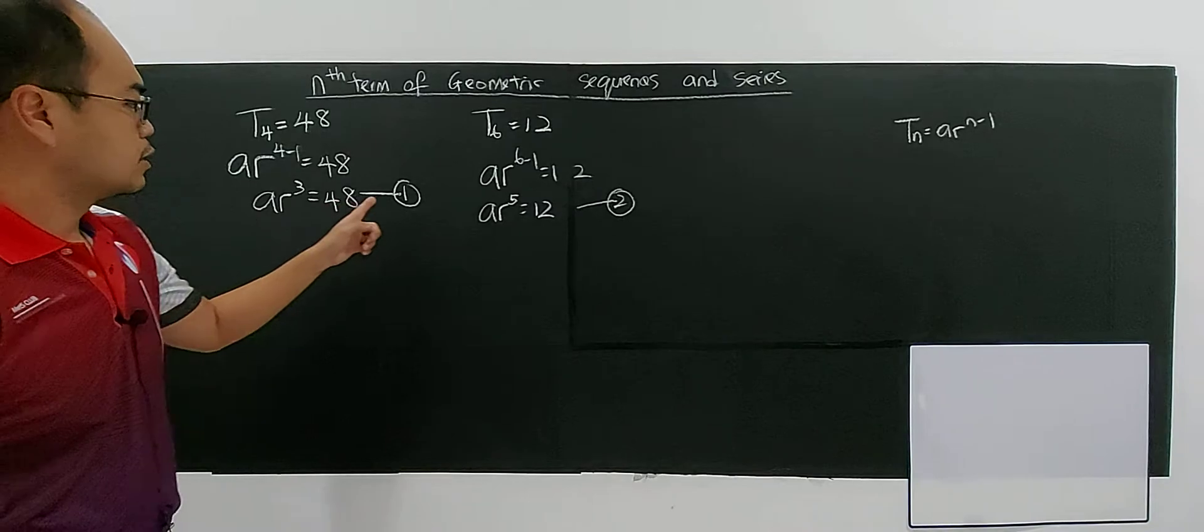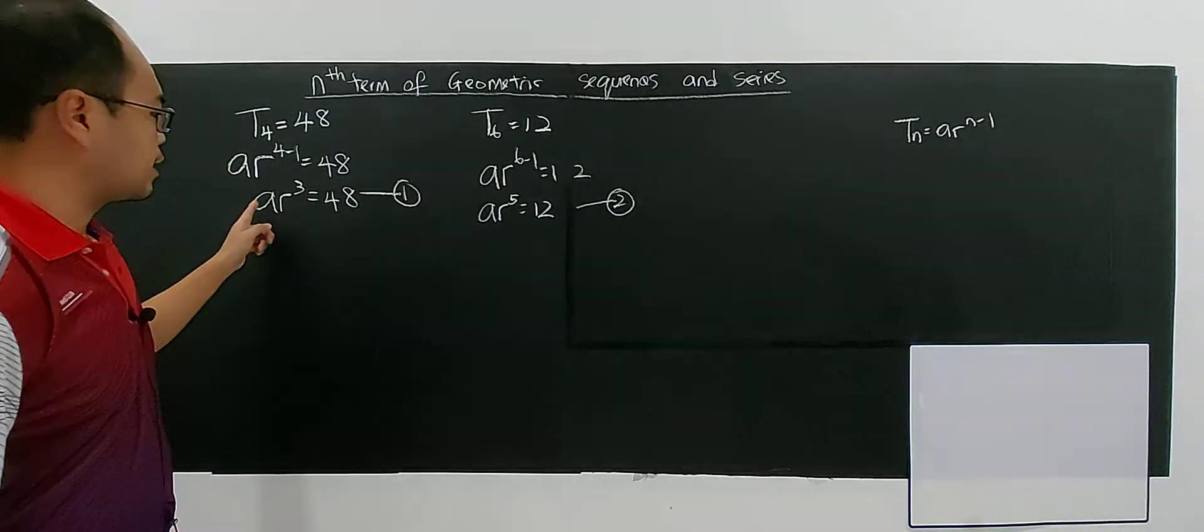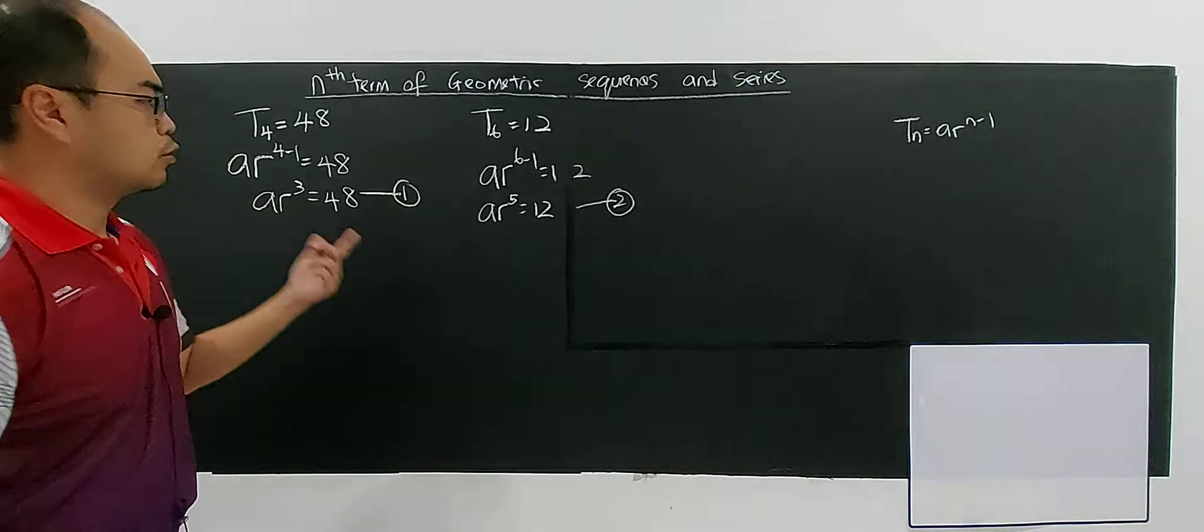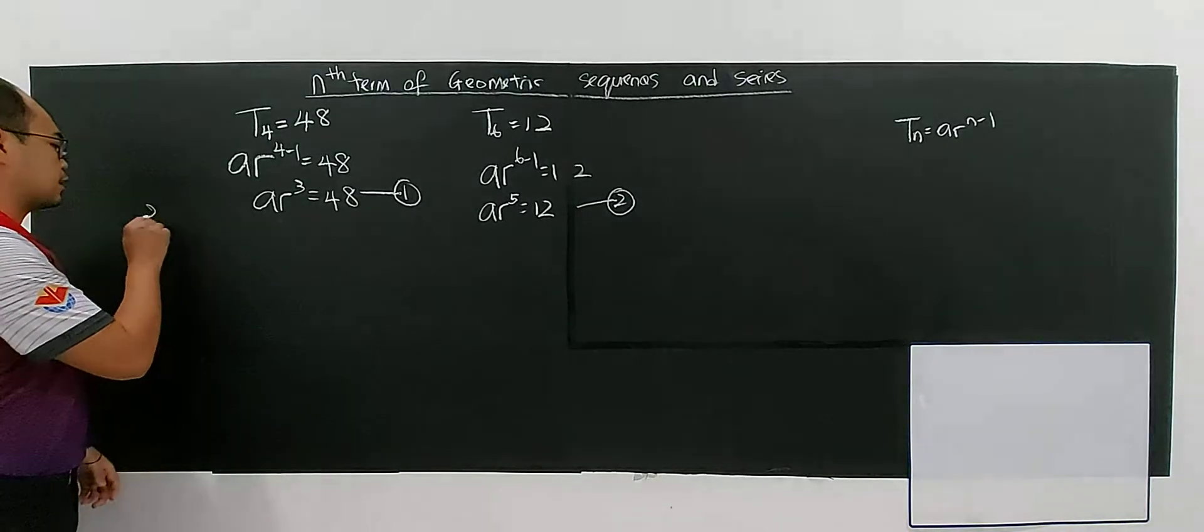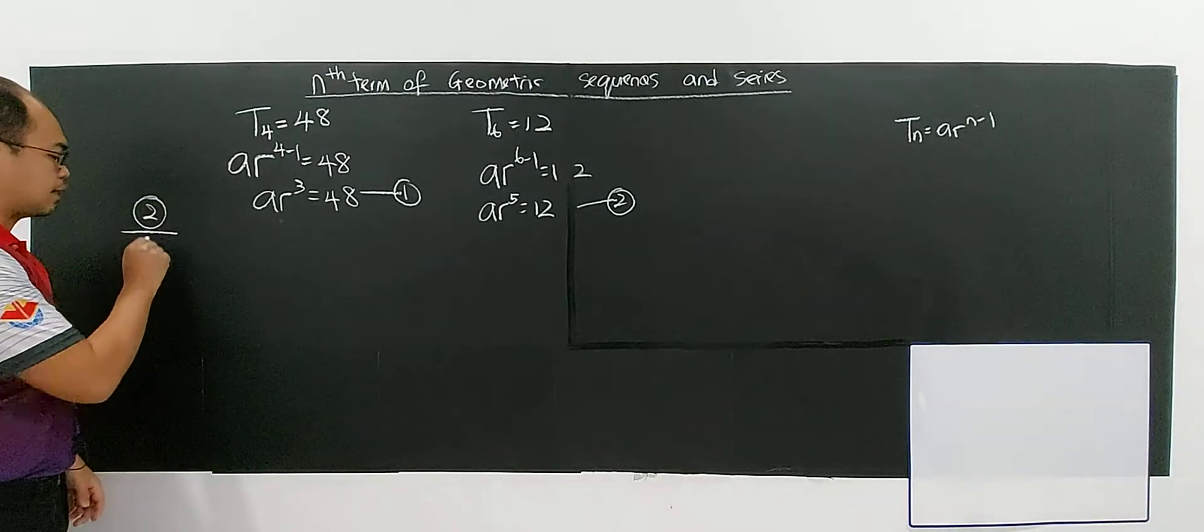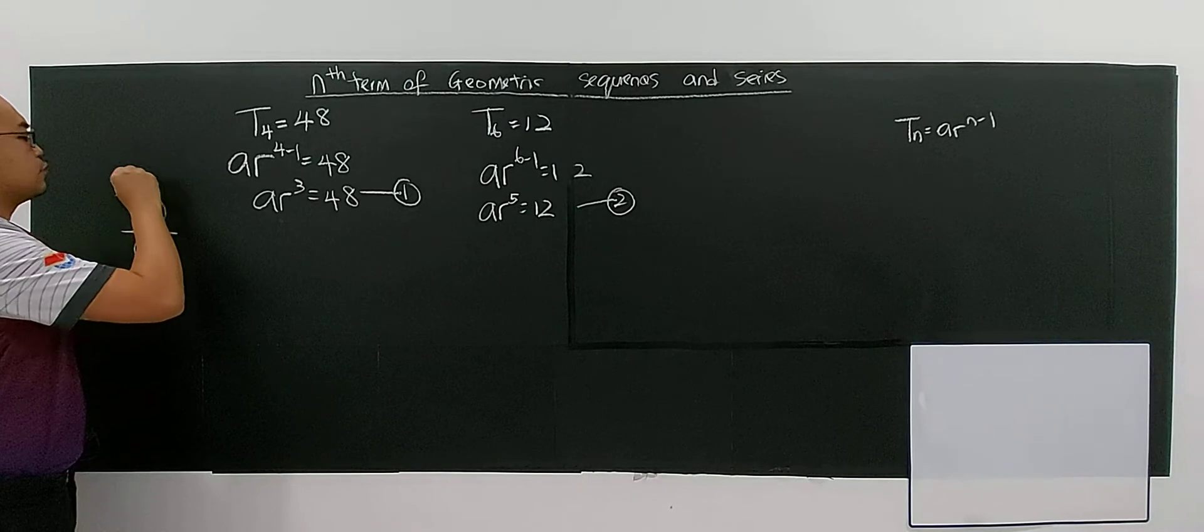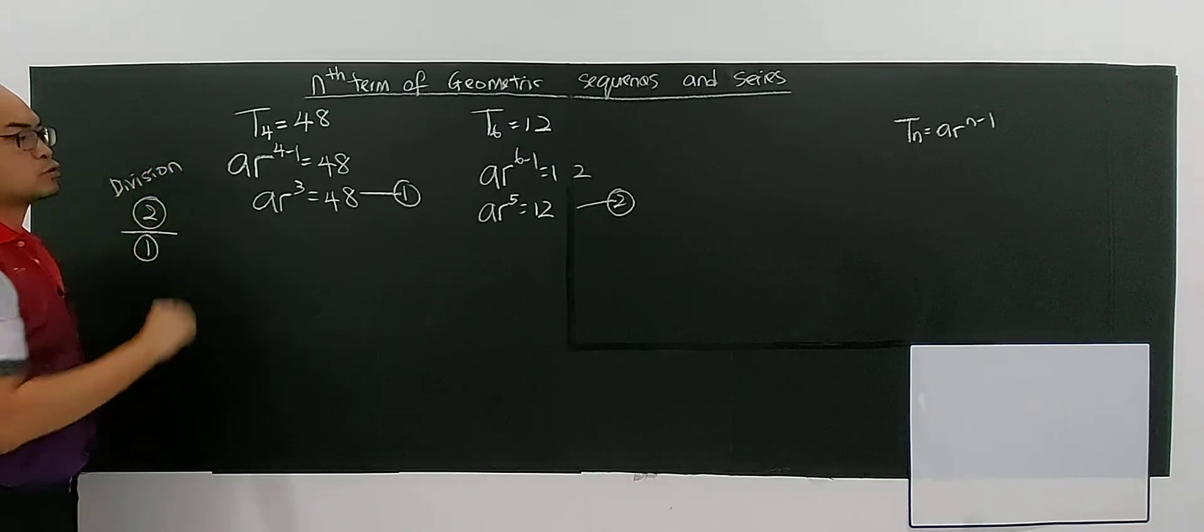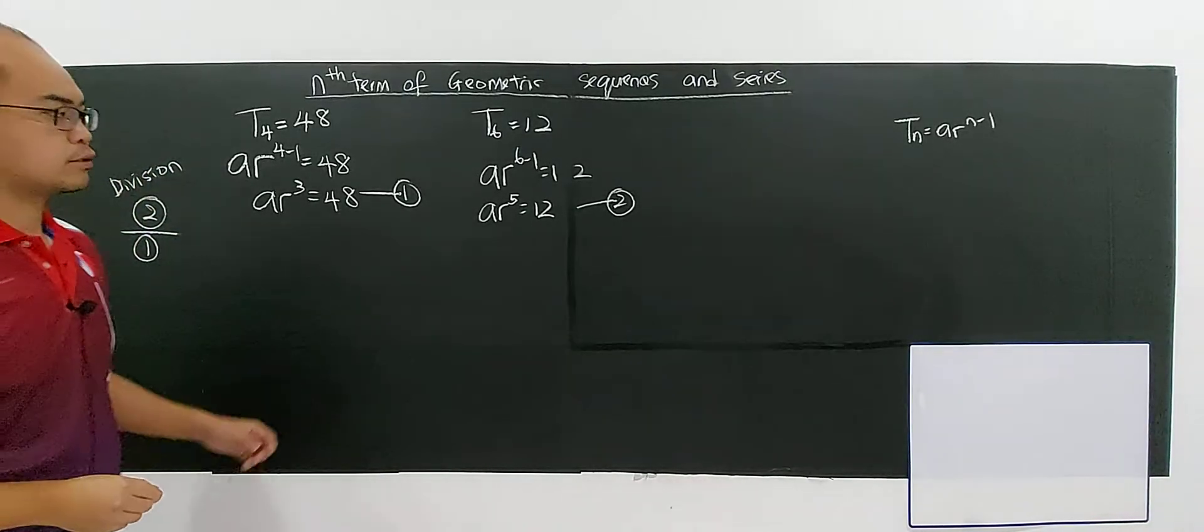For this case, I want to eliminate a. The only method here is to take equation 2 divided by equation 1. We use division to solve the simultaneous equation.